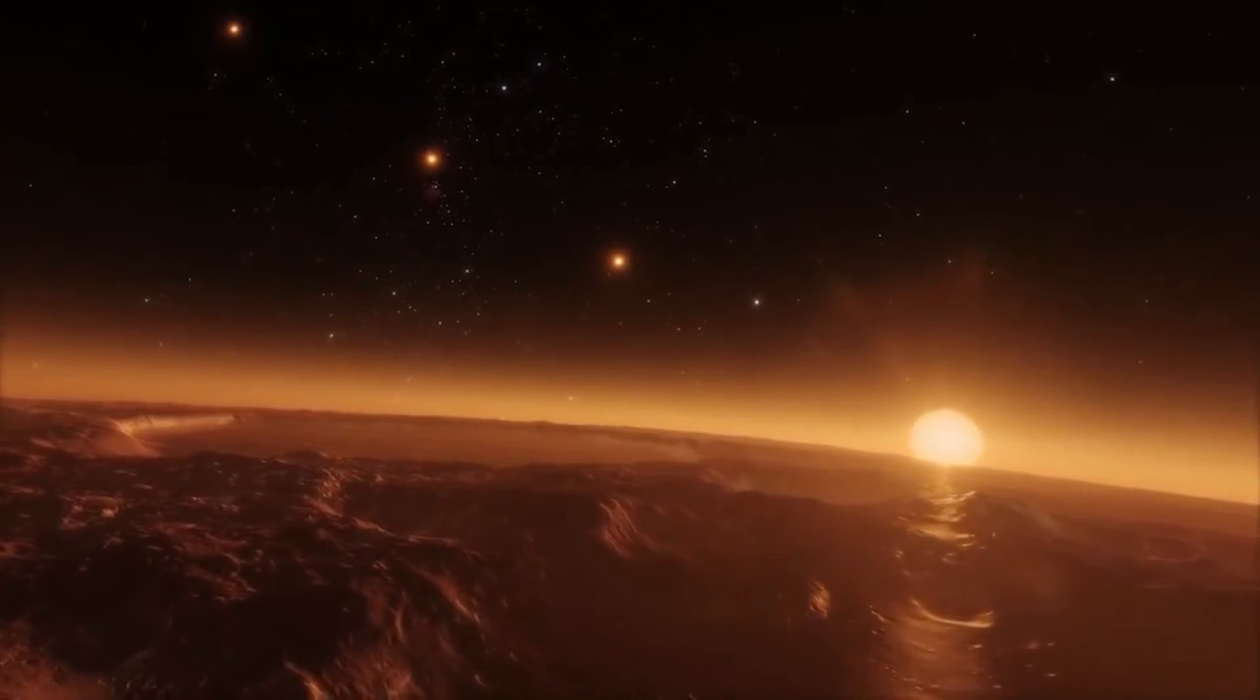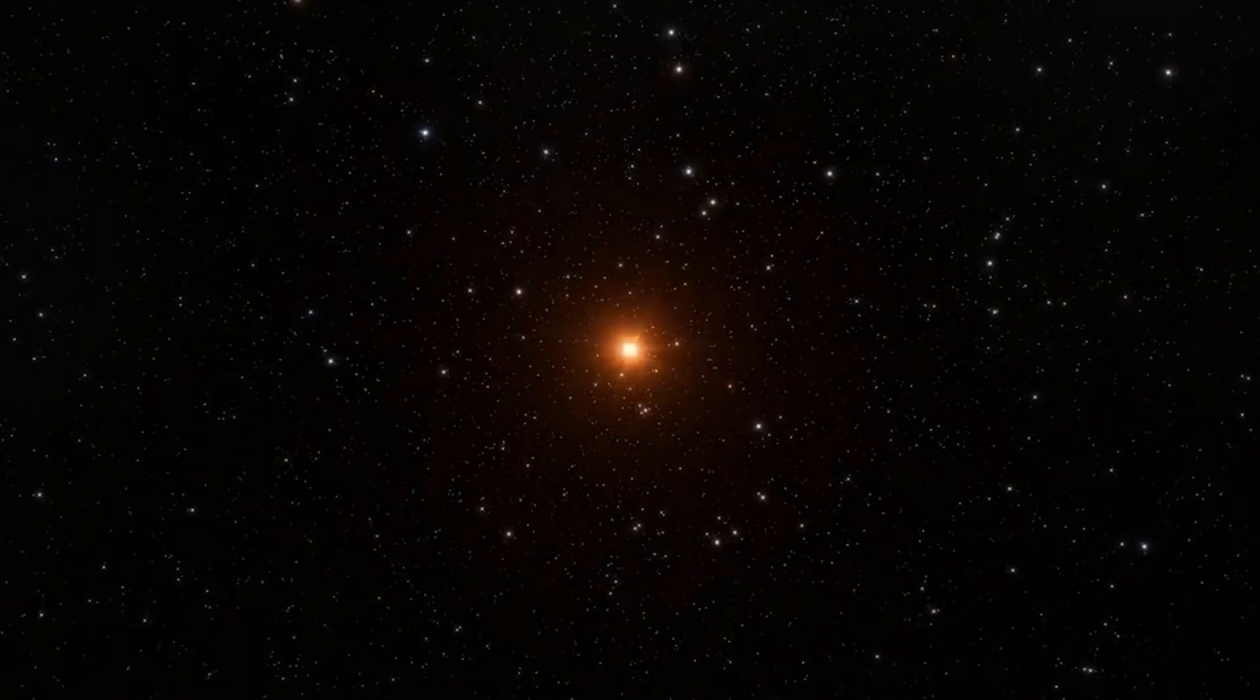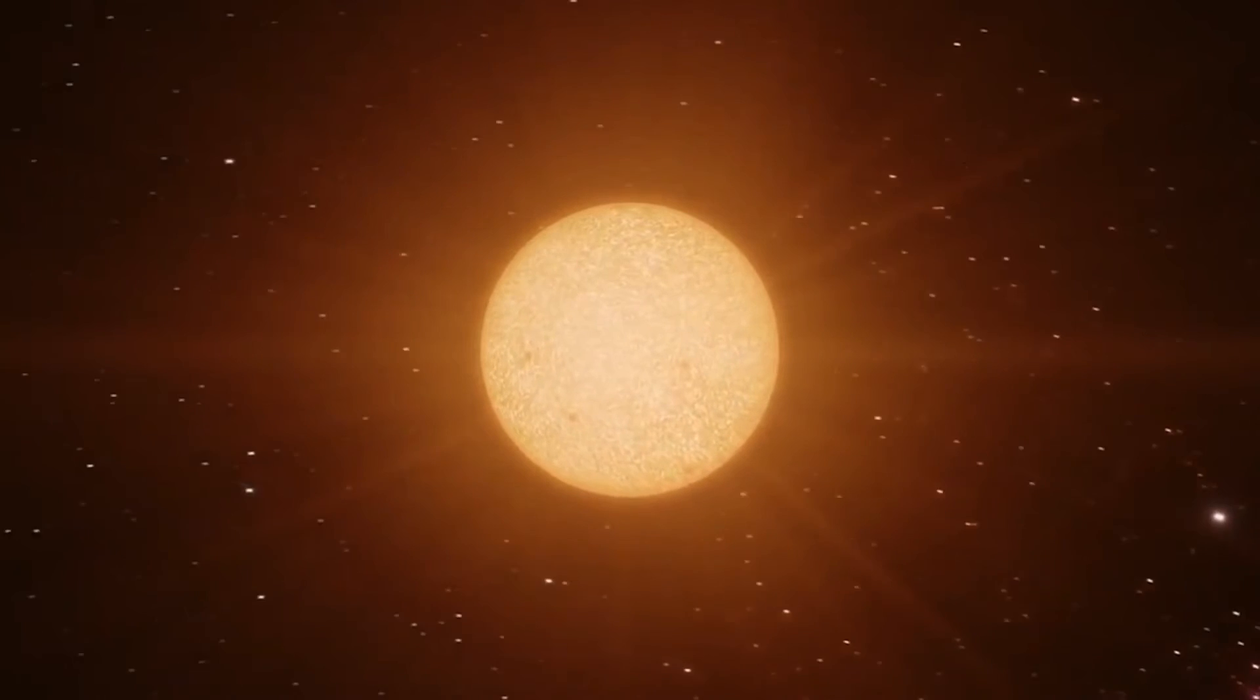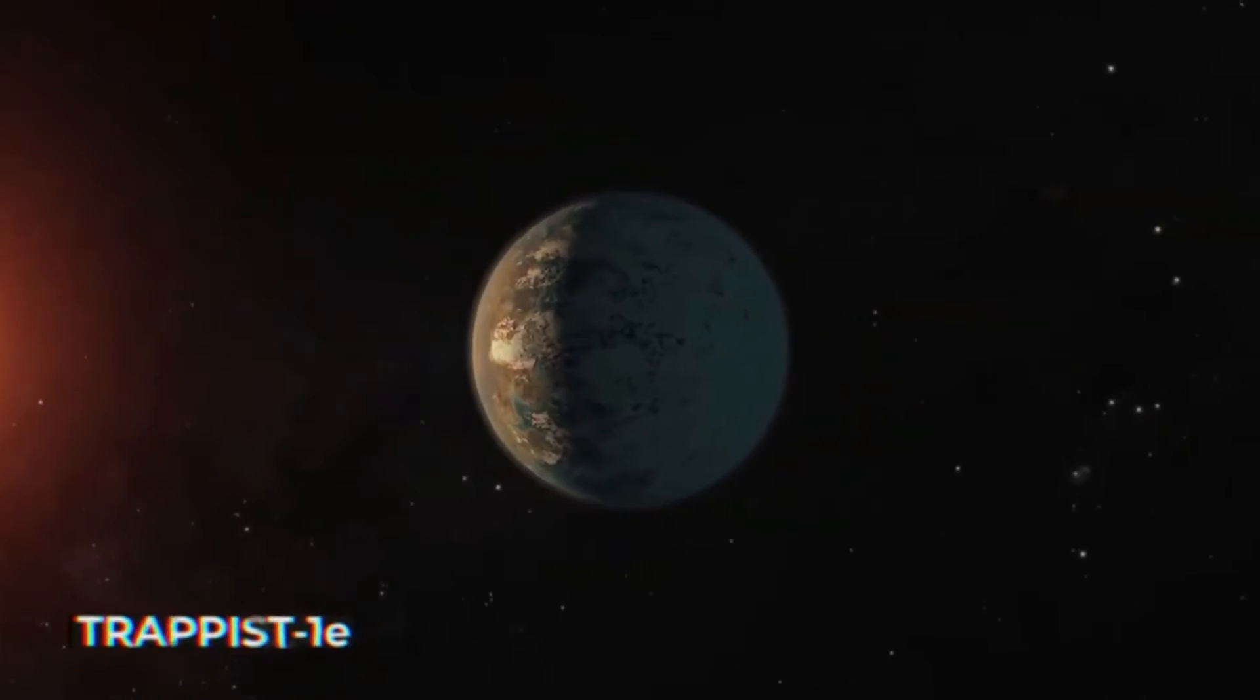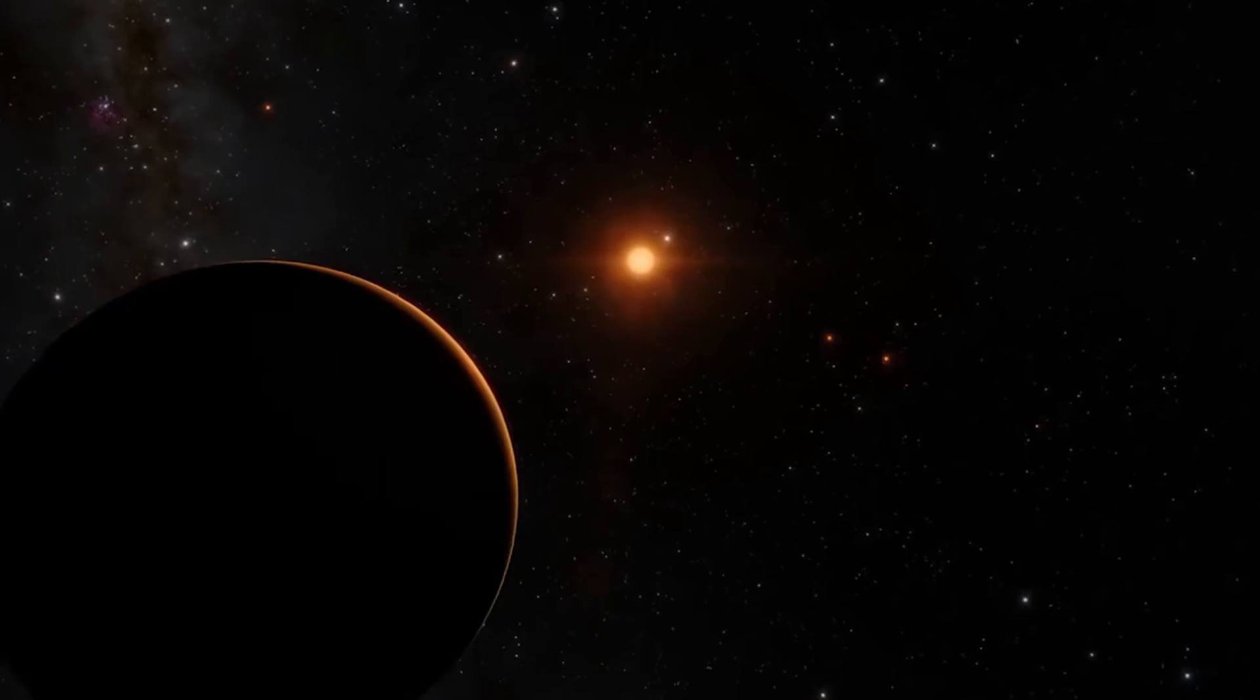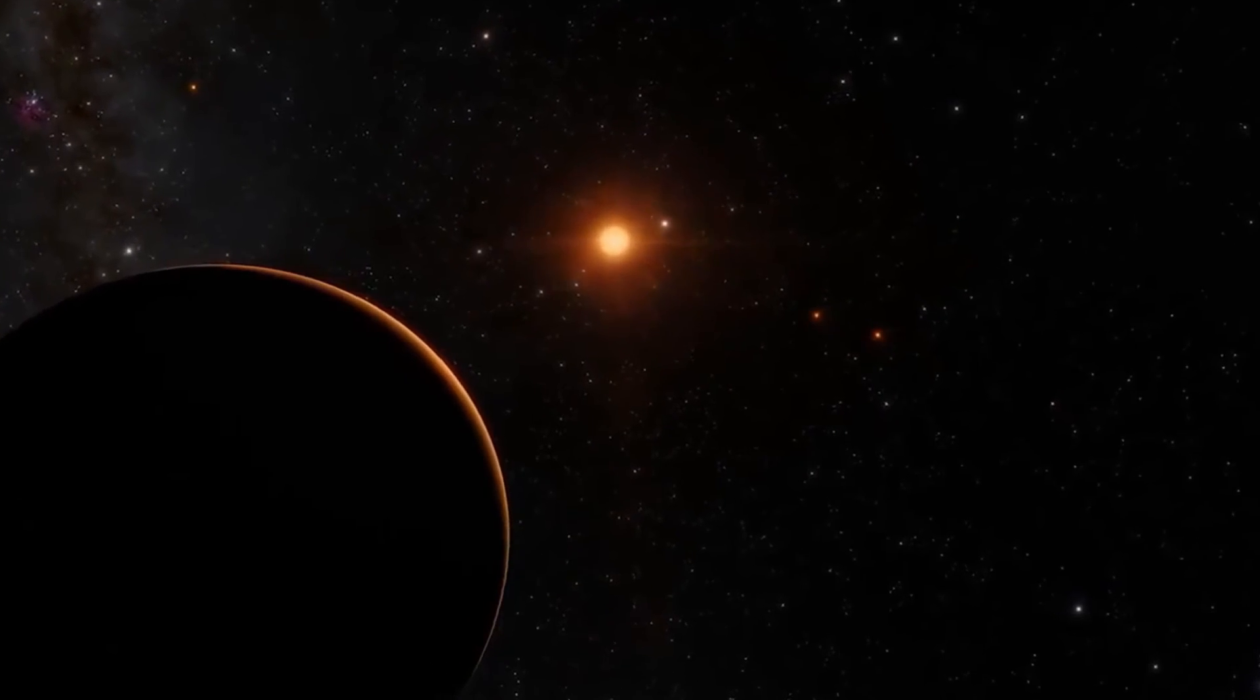But the JWST isn't just a one-trick pony. It also has a number of other features that make it ideal for researching exoplanets. For instance, it has a sunshield the size of a tennis court that keeps the telescope cool and allows it to observe infrared without interference from the sun's heat.